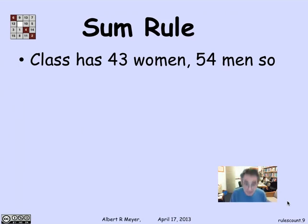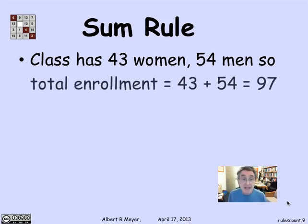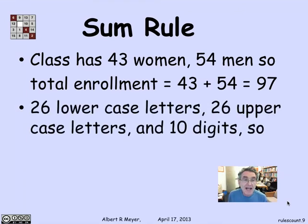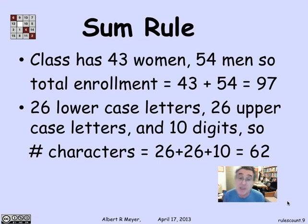But let's do an example. Suppose a class has 43 women and 54 men. How many people are in it? 43 plus 54 equals 97. This is implicitly assuming that there's no one whose sex is ambiguous and that there's no third sex, so that men and women are disjoint. The total number of students is the sum of the number of men and women. Another one is there are 26 lowercase Roman letters and 26 uppercase Roman letters and 10 digits, and so there are 26 plus 26 plus 10 equals 62 characters in that repertoire of symbols.